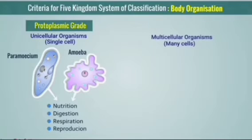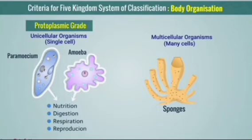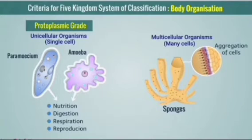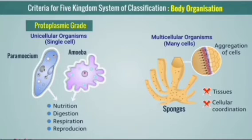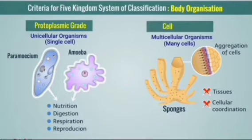The second level is called cellular level of organization. In multicellular organisms like sponges, many cells are joined together or aggregated together and they perform a particular function. So it is also called cellular grade organization.